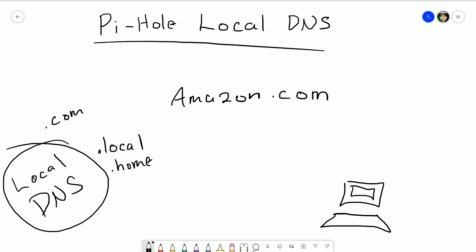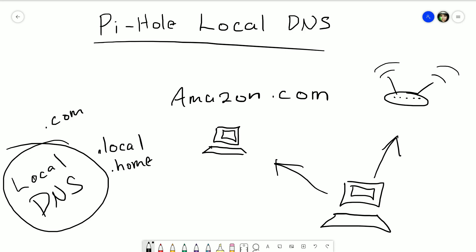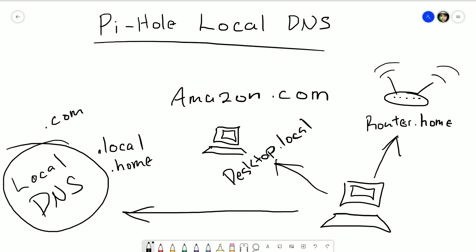The reason you might want to use local records in your home network is so you don't have to memorize IP addresses for different devices. Typically to access your router you'd go to 192.168.1.1, but with local DNS records your computer can resolve names like router.home or desktop.local. Also, if a device's IP changes, you just update the record on your DNS server and the hostname keeps working.